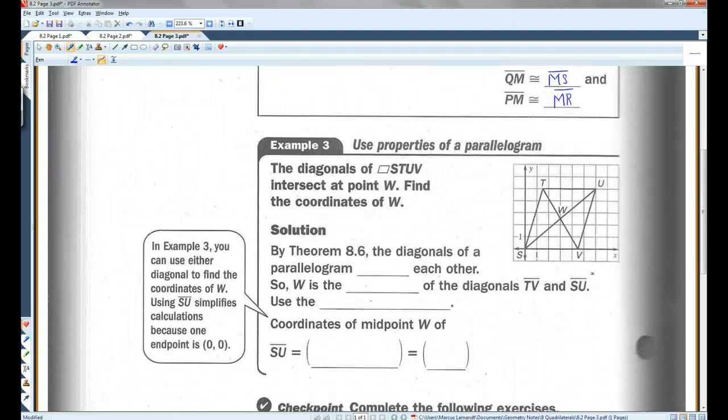All right, so for example, the diagonals of parallelogram STUV intersect at point W. So, they already tell you this is a parallelogram. That means the opposite sides are parallel, the opposite sides are congruent, opposite angles are congruent, all that stuff. By theorem 8.6, the diagonals of a parallelogram bisect each other. So, W is the midpoint of diagonals TV and SU. Remember, midpoint is the point right in the middle of a segment.